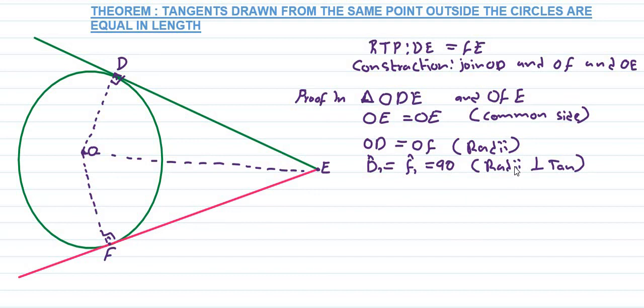To prove the triangles congruent, we use the right angle hypotenuse side criterion. Triangle ODE is congruent to triangle OFE because they are right angles with 90 degrees, the hypotenuse is the common side, and one side is equal. Therefore, DE equals FE by congruent triangles.